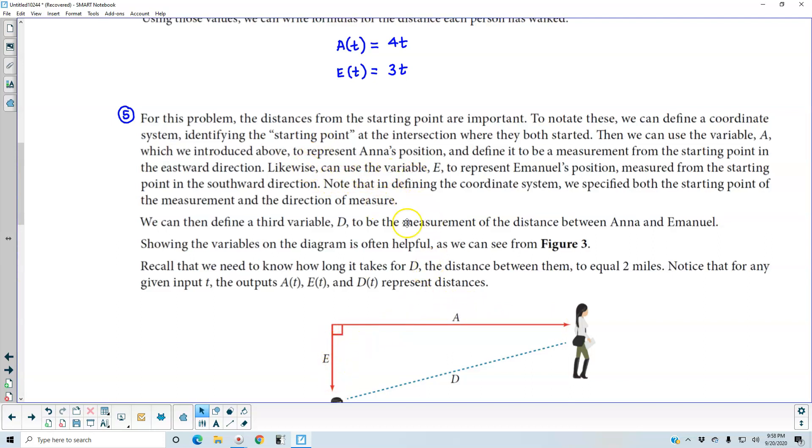Likewise, we can use the variable E to represent Emanuel's position measured from the starting point in the southward direction. Note that in defining the coordinate system, we specified both the starting point of the measurement and the direction of the measure.